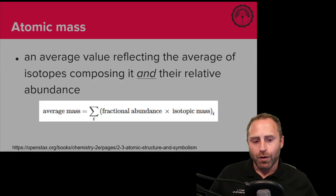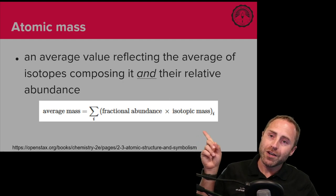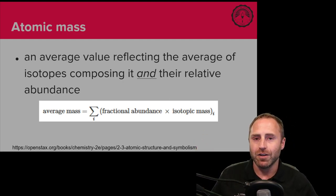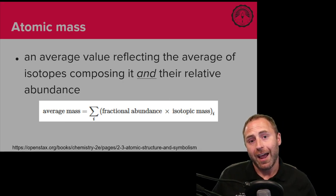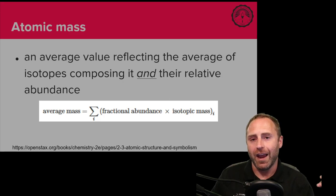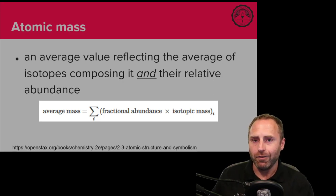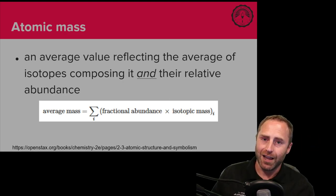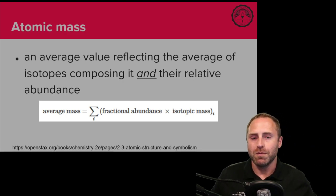This equation is how we solve for an element's average atomic mass. The number you see reported on a periodic table is not the atomic mass of a specific isotope — it's the average mass of all the isotopes, weighted by how much each isotope exists multiplied by that isotope's mass.